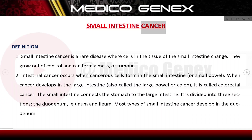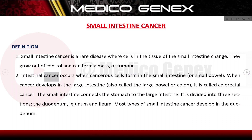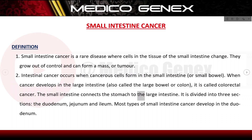Small intestine cancer is a rare disease where cells in the tissue of the small intestine change, grow out of control, and can form a mass or tumor. Intestinal cancer occurs when cancerous cells form in the small intestine. When cancer develops in the large intestine, also called the colon, it is called colorectal cancer. The small intestine connects the stomach to the large intestine.